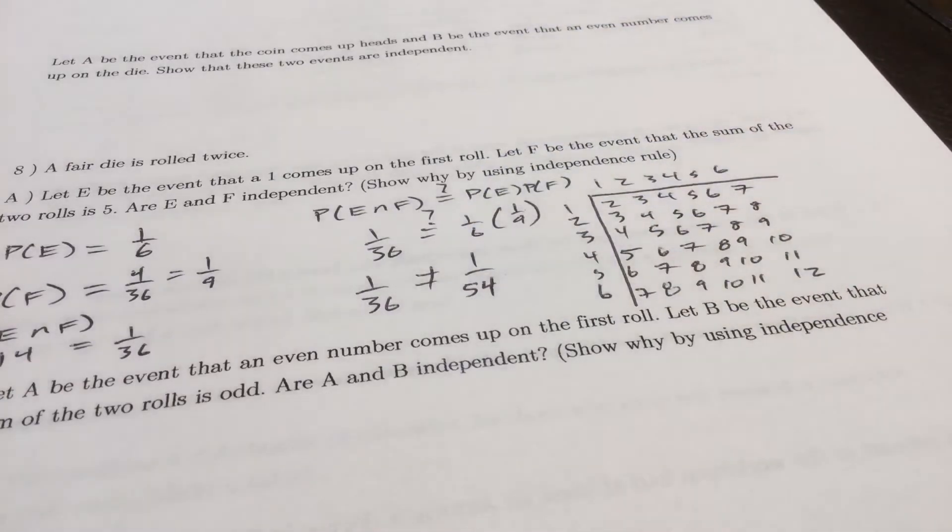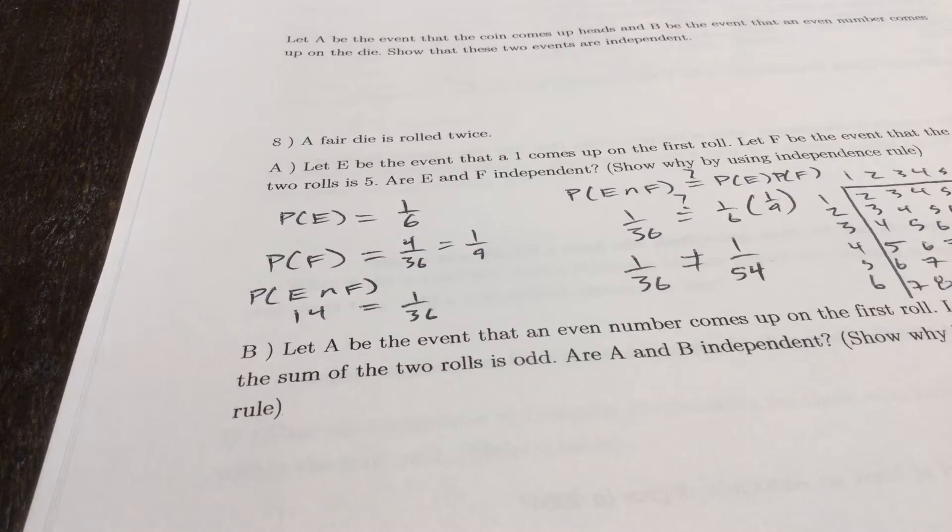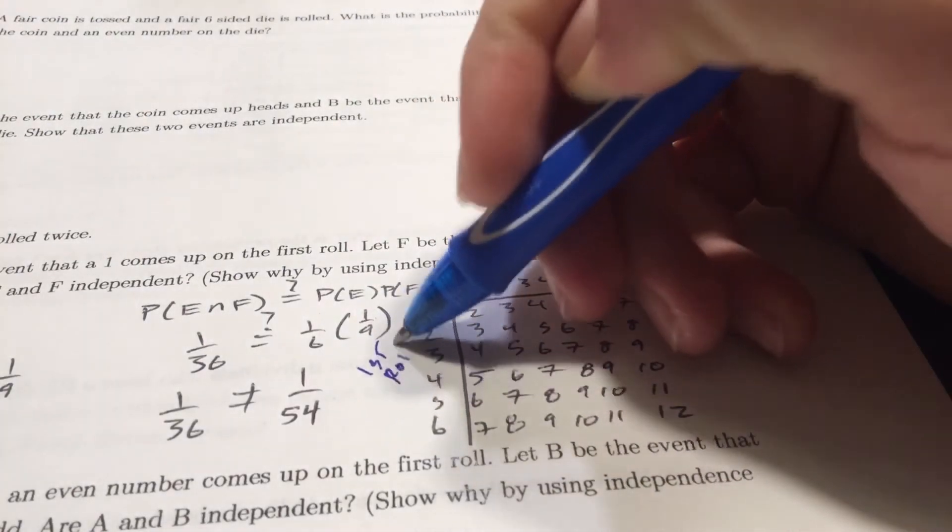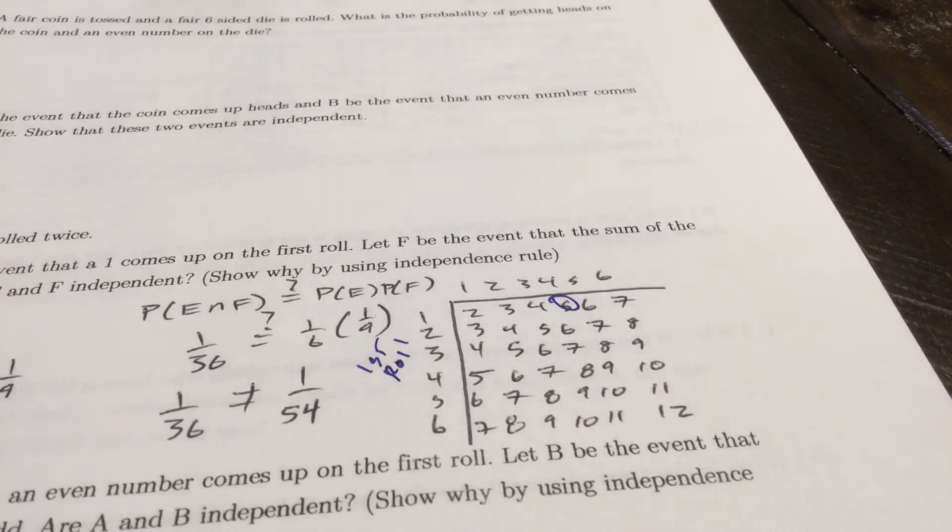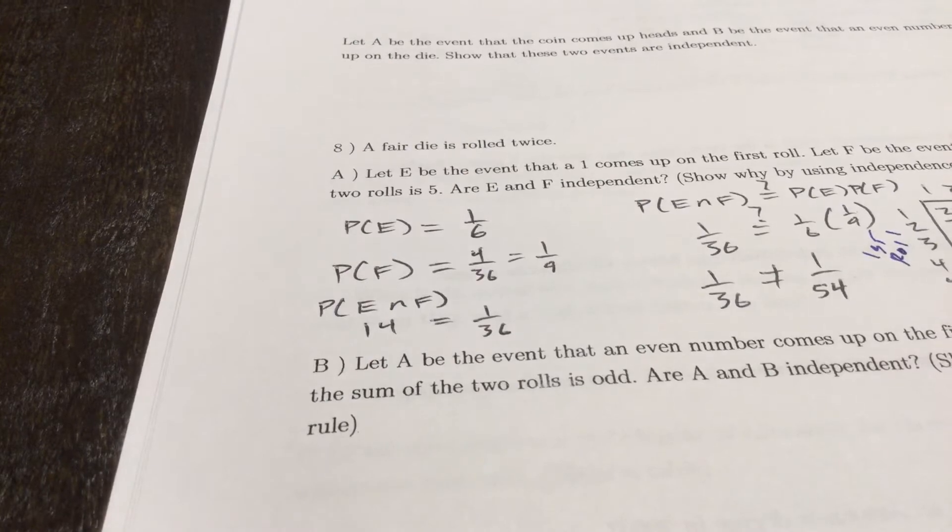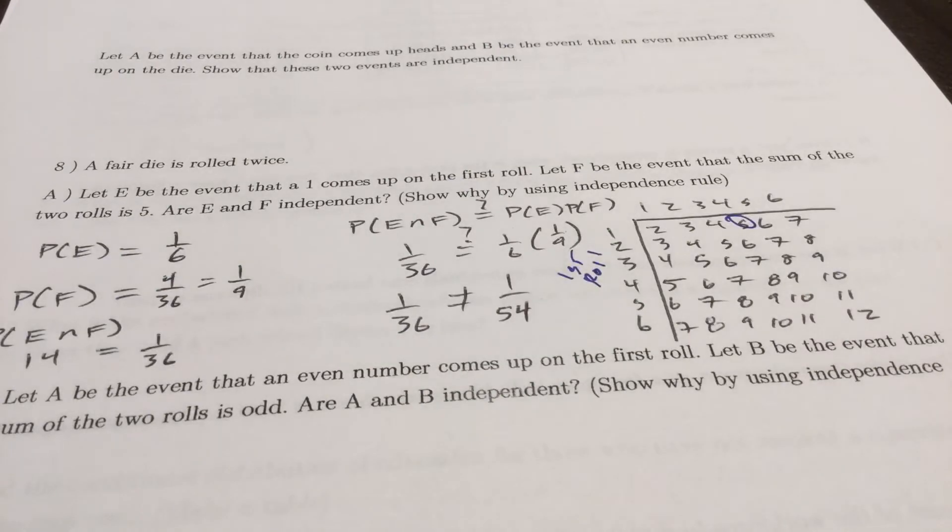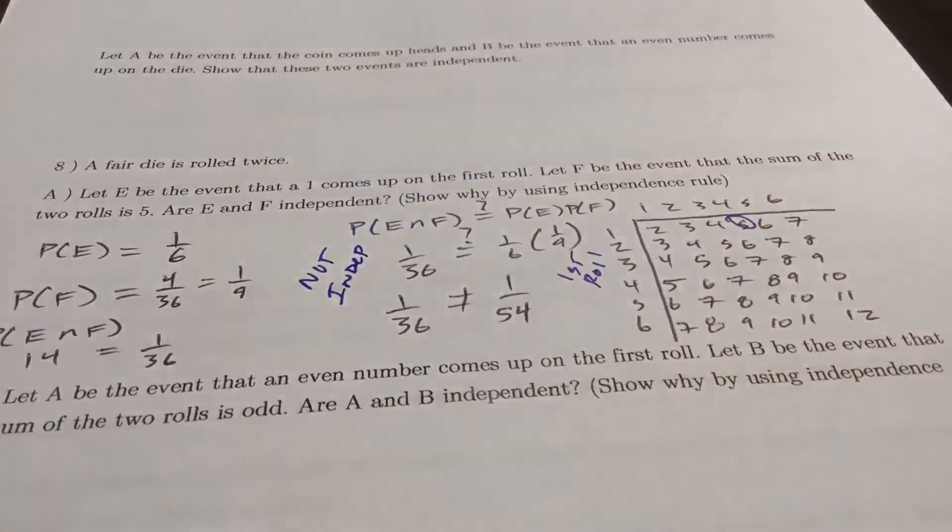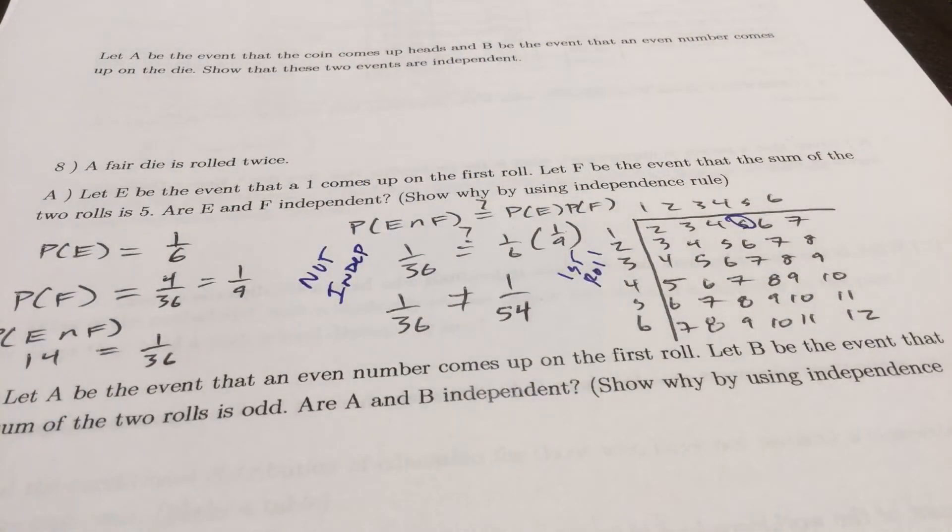That's the right side. So their intersection is what follows. Both E and F have to occur. To get a sum of five with a one as the first roll, that can only happen one time. If you want to think about the first roll getting a one and a sum of five, you only see that one time. So one out of 36 is their intersection. One four means you roll one then you get a four to get a sum of five. One out of 36 does not equal one out of fifty-four, so not independent is what you're going to write.